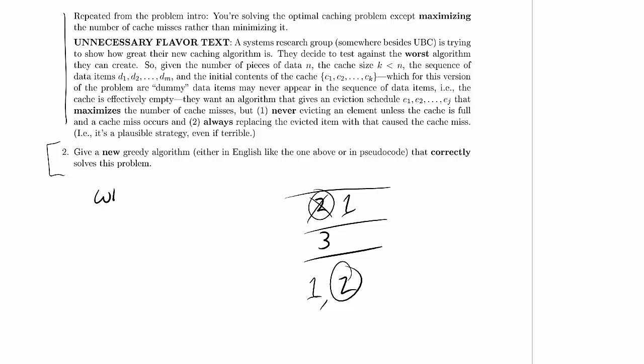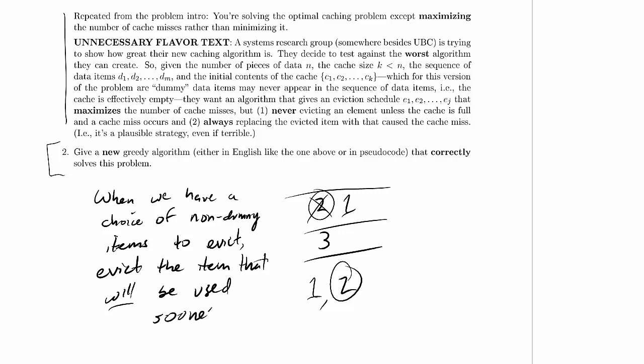So when we have a choice of non-dummy items to evict, evict the item that will be used soonest. So that's a pretty easy description of a greedy algorithm, and it seems to capture what we were looking for.